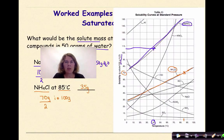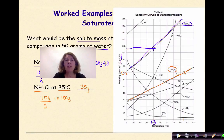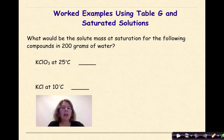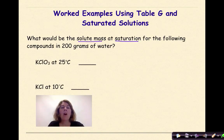So you really need to pay attention to that — what is the amount of solvent you're working with? Are you working with 100 grams of water, which is what Table G is in? Are you working with 50 grams of water? Or might you be working with 200 grams of water? Let's look at some examples of that. What would be the solute mass at saturation — meaning it intersects on the line — for the following compounds in 200 grams of water?